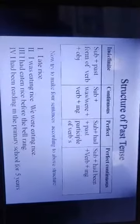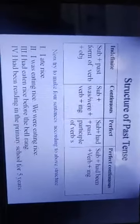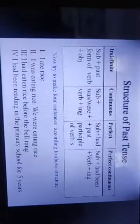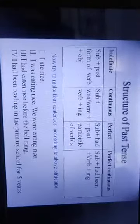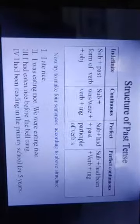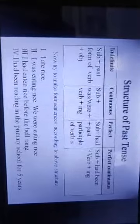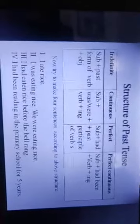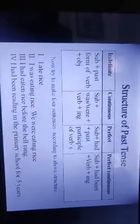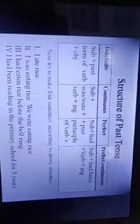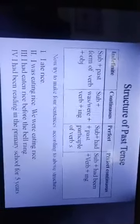Past perfect continuous tense structure: Subject + had been + verb + ing + object/extension. Example: 'I had been reading in this primary school for five years.' Here 'had been' is the auxiliary verb, and 'reading' is verb + ing. Please write all the structures and examples in your notebook.